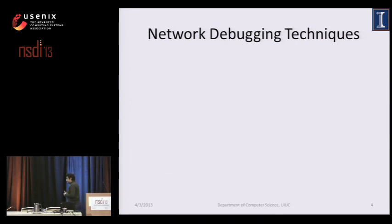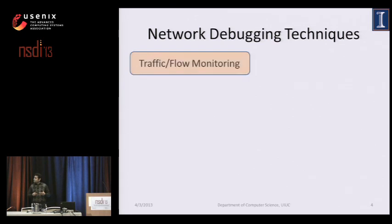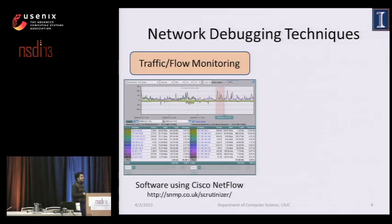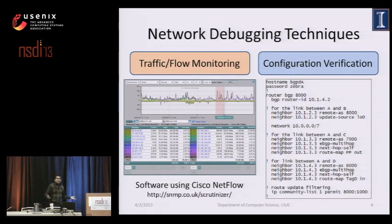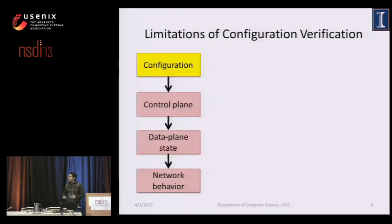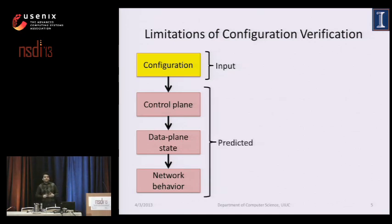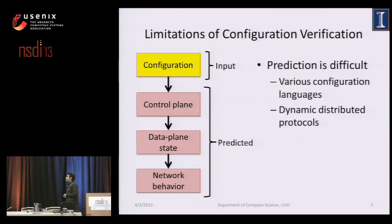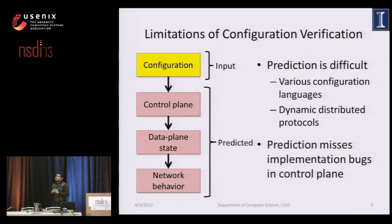There exist different debugging and traffic monitoring techniques currently in place. First, we have traffic and flow monitoring techniques such as those based on Cisco's NetFlow, which are useful in detecting traffic anomalies. A more systematic approach is configuration verification, where we take configuration files from different network devices and run checks to detect faults. However, in our earlier work at SIGCOMM 2011 with Anteater, we showed that configuration verification suffers from limitations — it uses configuration as input and prediction is difficult. It cannot accurately model the actual dynamics of the network, and it also misses implementation bugs that affect the data plane state only.